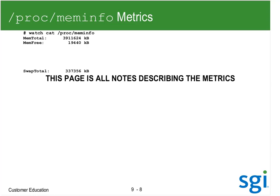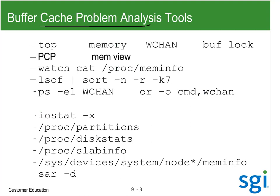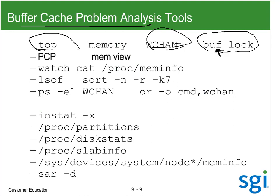So a buffer cache problem analysis tool. I'm going to look at top and use WCHAN. We were seeing the XFS buff locks earlier. I've gone into XFS statistics - there's a group of buffer cache statistics in the XFS field. I've got the mem view built and ready. I could just watch cache on proc meminfo.